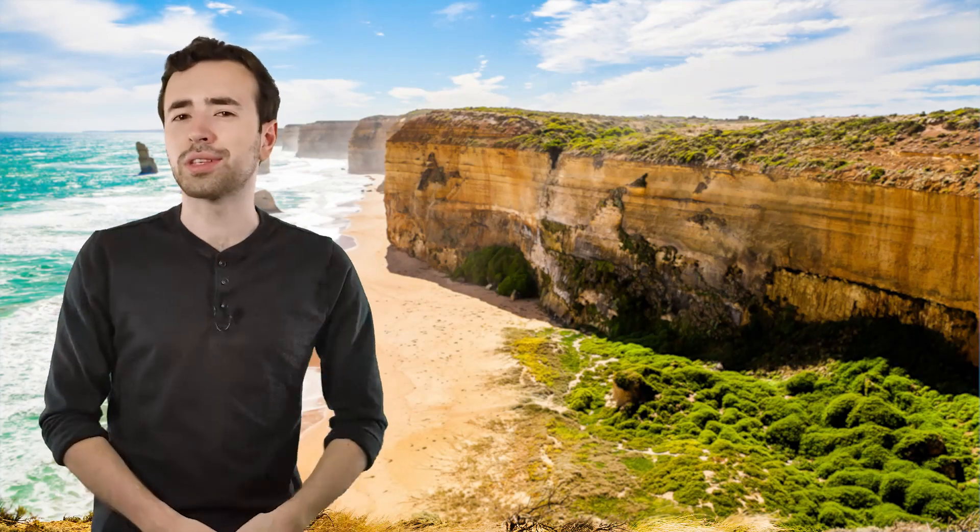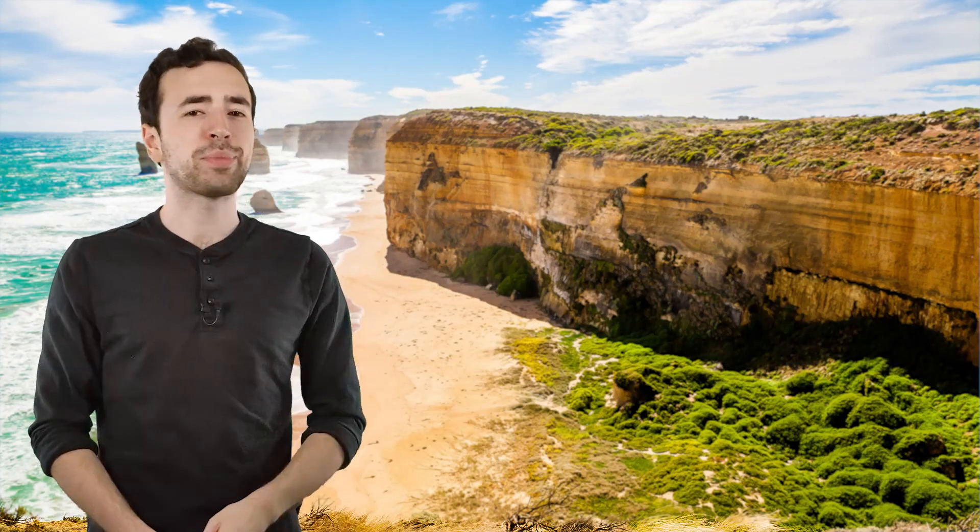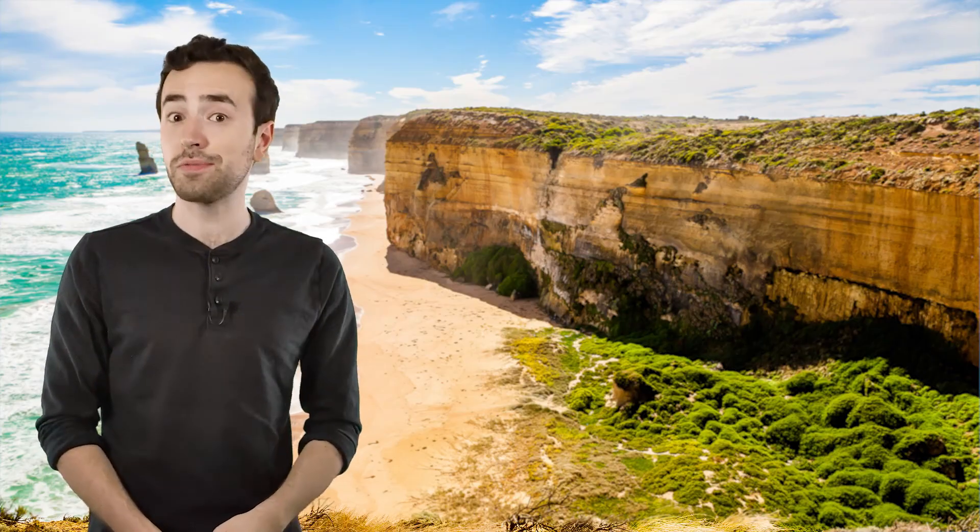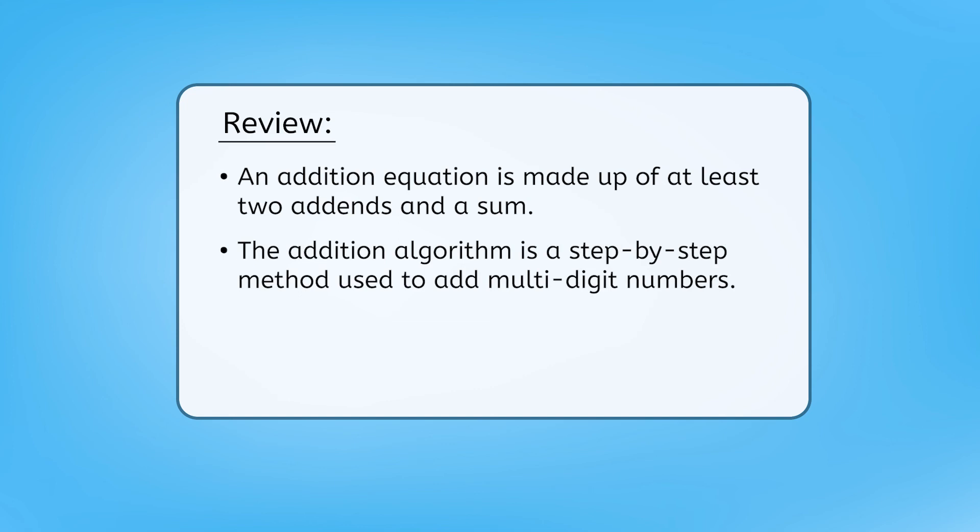So, what have we learned today, other than the fact I've got a bit more saving to do before I'm ready for my dream vacation? Well, now you know that an addition equation is made up of at least two addends and a sum. The addition algorithm is a step-by-step method we use to add multi-digit numbers, and regrouping is necessary when the sum of a single place value is more than one digit. With these skills, you are one step closer to planning your own dream vacation.